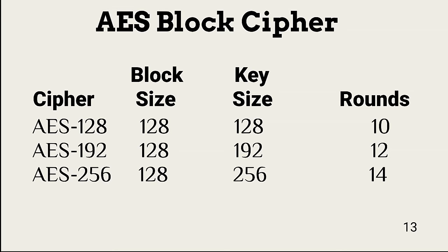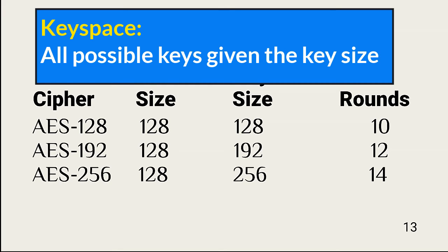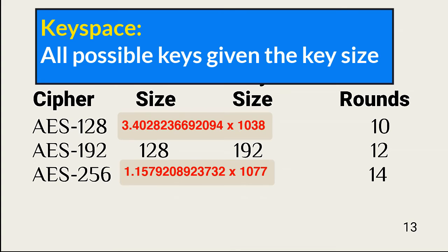Access to the plaintext requires the key. The only way to crack the ciphertext is to steal or guess the key, because use of 128 and 256-bit keys makes it impractical to step through all possible keys in the key space using today's processor power. The key space is made up of all possible keys based on the key length. A 128-bit key space includes an enormous number of keys, and the AES-256 key space is far larger.